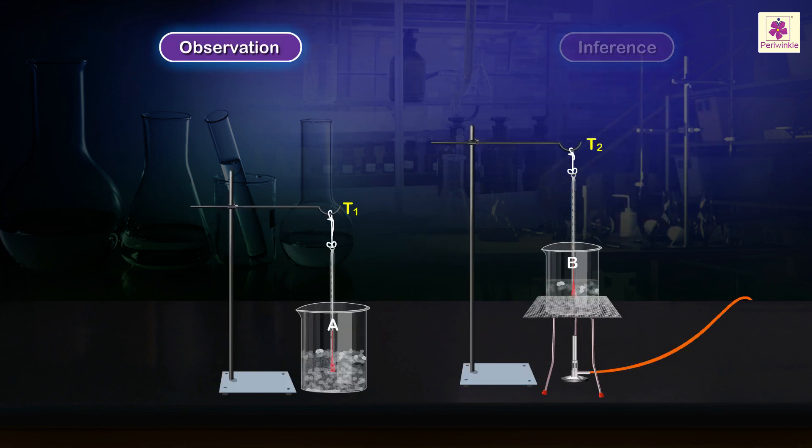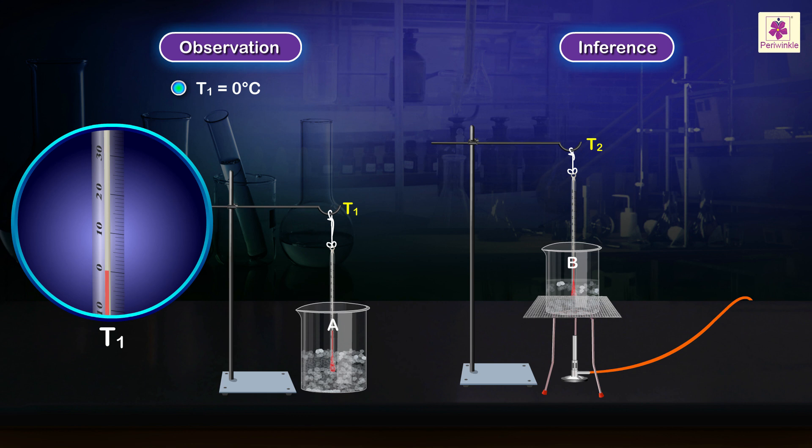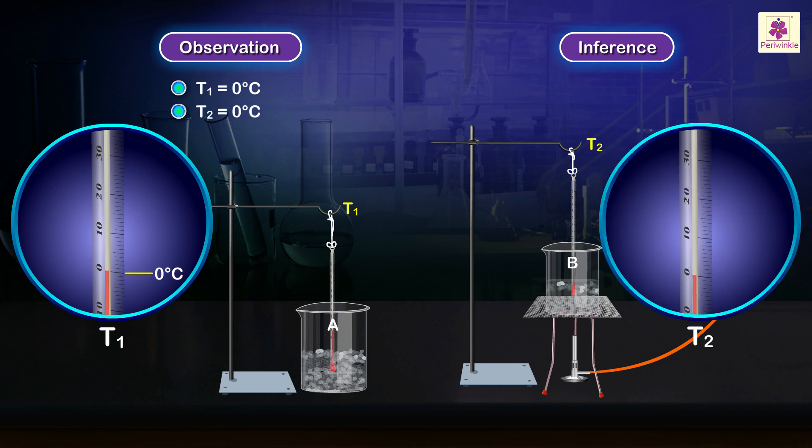Observation: D1 equals 0 degrees Celsius. D2 equals 0 degrees Celsius. Inference: The temperature of melting ice is 0 degrees Celsius.